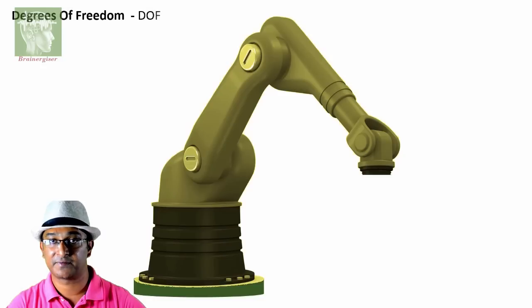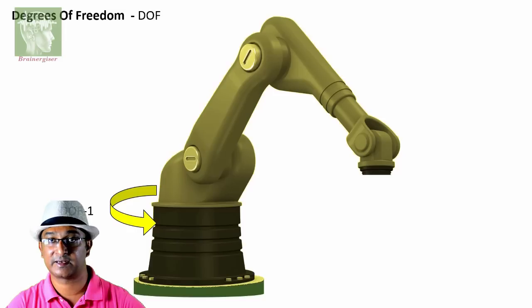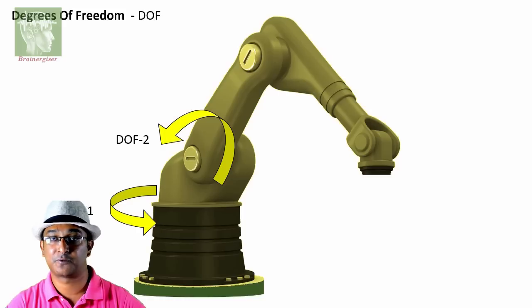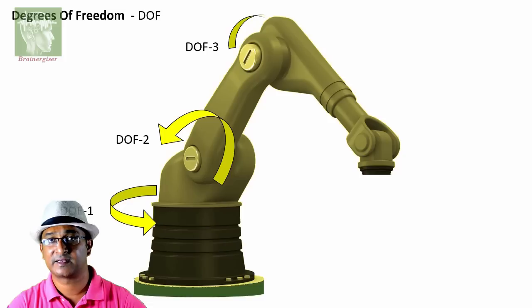One term, that is DOF, that is degrees of freedom, I'll be explaining now. Suppose DOF-1, this will tell the robot will rotate clockwise or anticlockwise. DOF-2, that is the arm will go up or down. Like DOF-3, that is the elbow gripper.